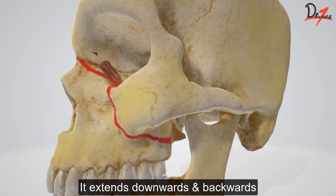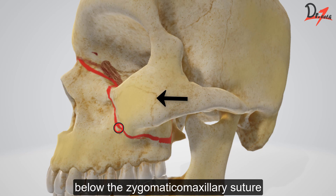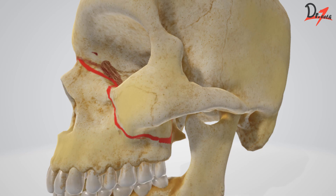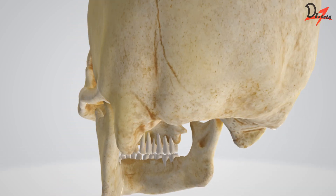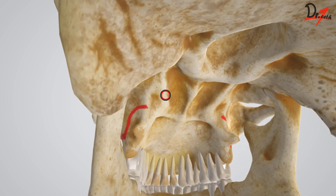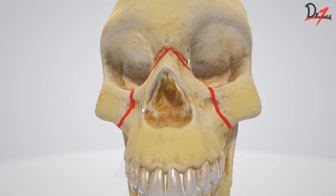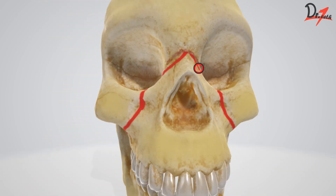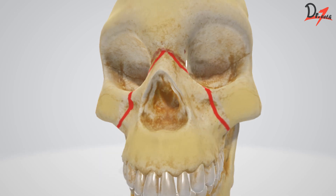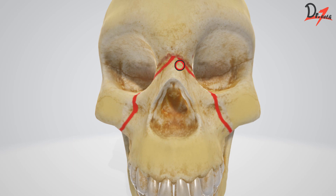Then as you can see here, it extends downward and backward. If you look from the back, these are the pterygoid plates, and the fracture line reaches the middle one third of the pterygoid plate. Now, when this fracture is present bilaterally on both sides, it looks like a pyramid — that is why it is also known as a pyramidal fracture.